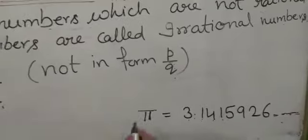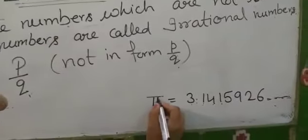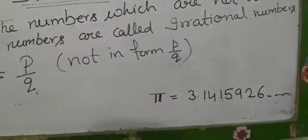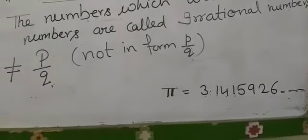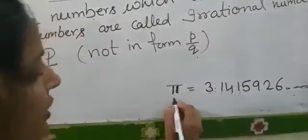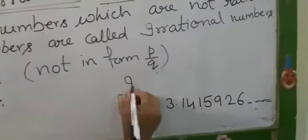Pi is the irrational number. Pi's value is the exact value. Pi's value, the exact value of Pi, we call it the irrational number.